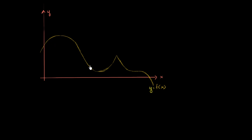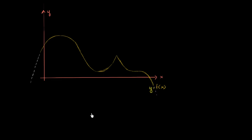I've drawn a crazy-looking function here in yellow. What I want to think about is when this function takes on maximum values and minimum values. For the sake of this video, we can assume that the graph of this function just keeps getting lower and lower as x becomes more and more negative, and lower and lower as x goes beyond the interval that I've depicted right over here.